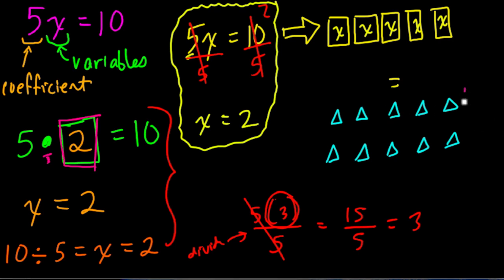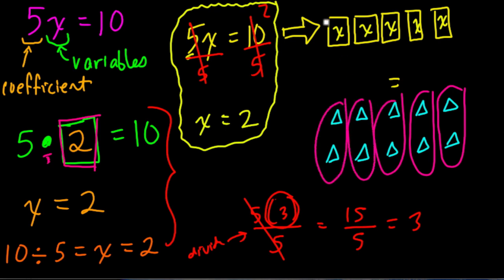If we divide this side by 5, we have 10 things. We divide them in 1, 2, 3, 4, 5 equal groups. And then if we divide this side in 5 groups, here's 1, 2, 3, 4, 5. We can see that each x has 2 triangles. That's really what we're showing here. We divide both sides by 5.